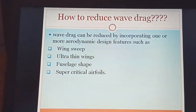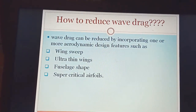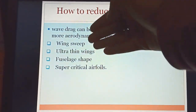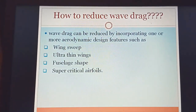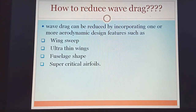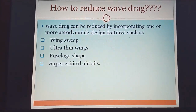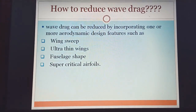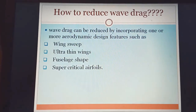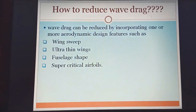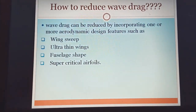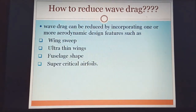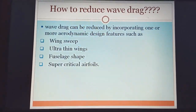The supercritical aerofoil has a flat upper surface, a slight curvature on the lower surface, and a large nose radius. These four methods are the most important for reducing wave drag. Wave drag is produced due to formation of shock waves, which occur in supersonic or transonic flight when Mach number exceeds one.